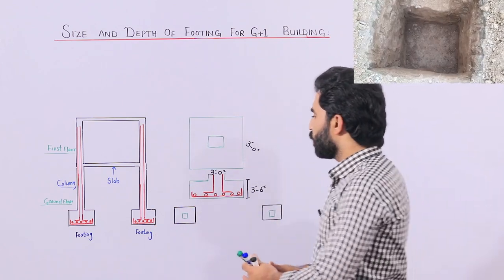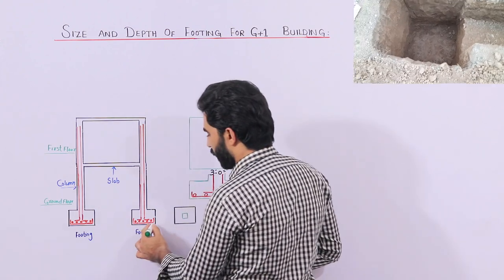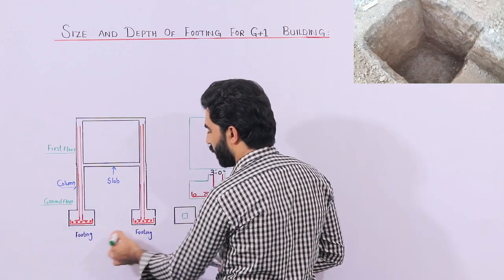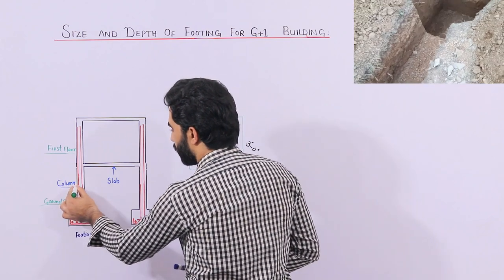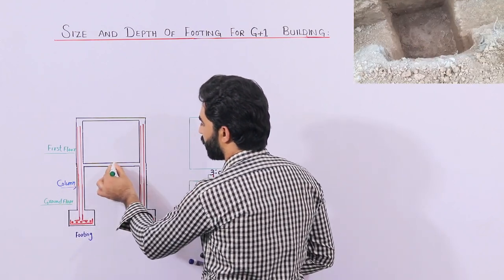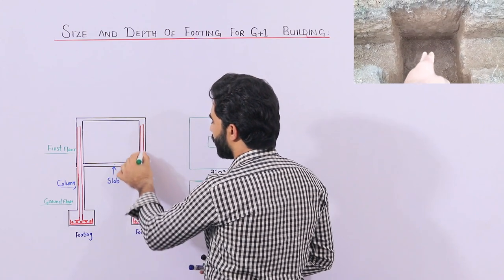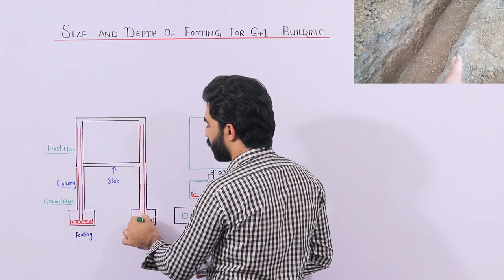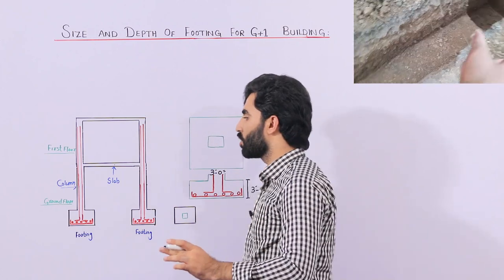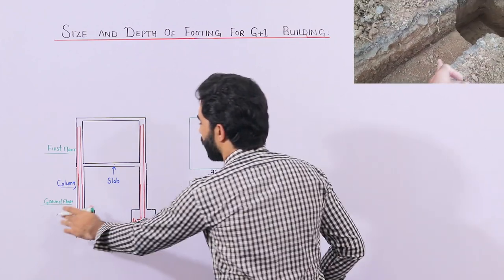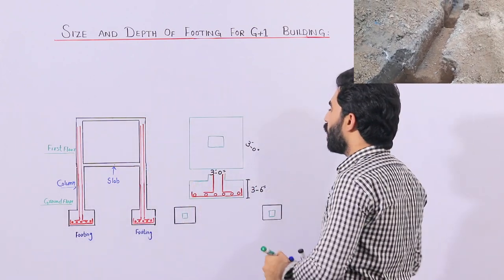You can see here — this is a footing, this is another footing, this is the RCC column, this is another RCC column, and this is the slab. Inside, the red color lines show you the steel reinforcement. I will also guide you for steel reinforcement. This is G+1: ground floor plus first floor.